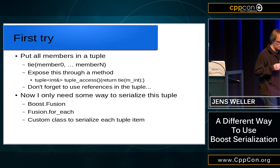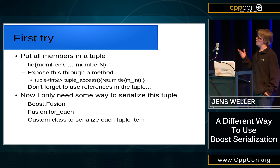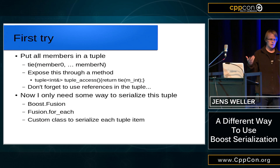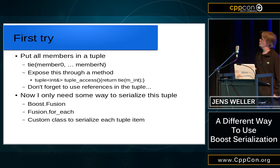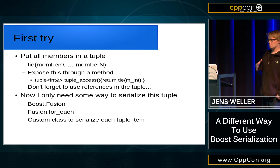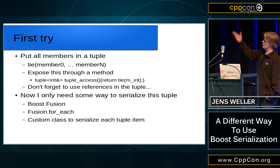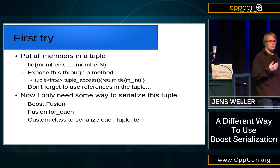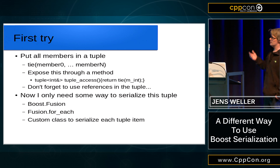I was thinking about finding a way to just serialize my members. If I call std::tie with all the members I want to serialize, I get a tuple containing all my members as references. If I expose that through a method, then I have something which is better than public members — just don't forget the reference in the return type. Then I only need something to serialize the tuple, which is pretty easy with boost fusion and boost fusion for_each — I just need an additional custom class to serialize each tuple item.